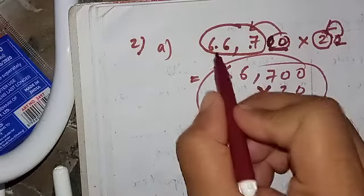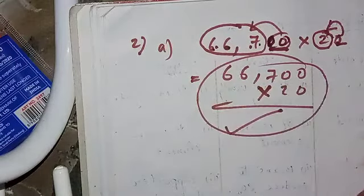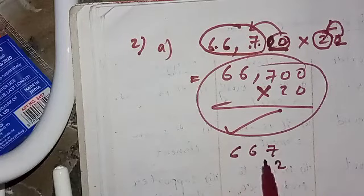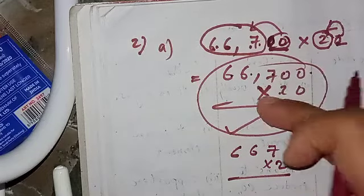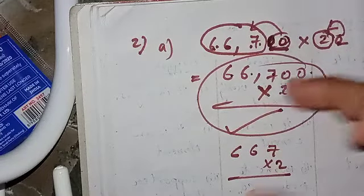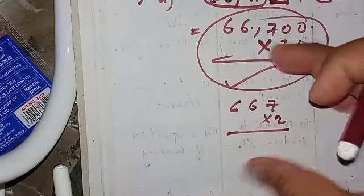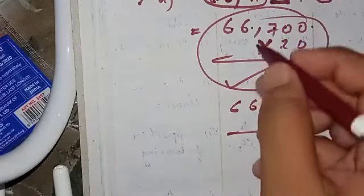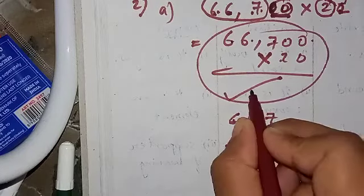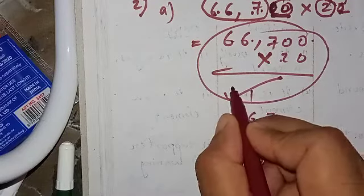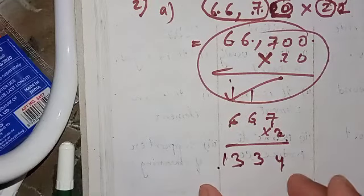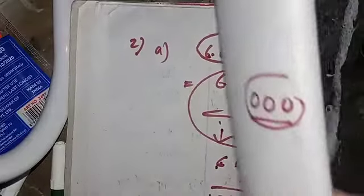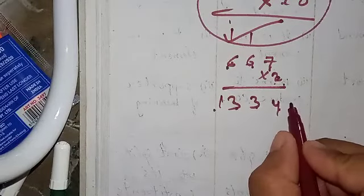Here we have three trailing zeros in total — remember that. Now multiply 6667 × 2. That is a much simpler multiplication: 2 × 7 = 14, carry 1; 2 × 6 = 12 + 1 = 13; 2 × 6 = 12 + 1 = 13. So we get 1334. How many zeros were left aside? Three. Just put those three zeros into the answer, giving 1334000.